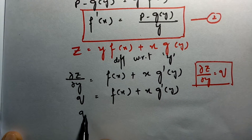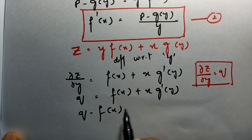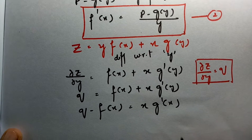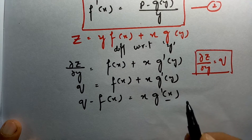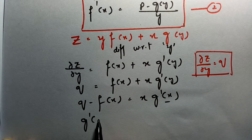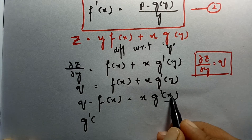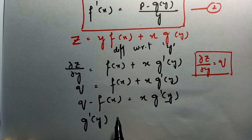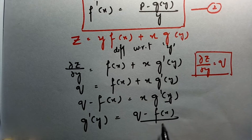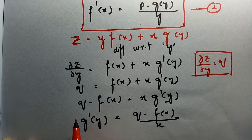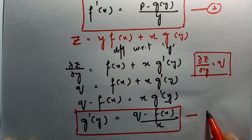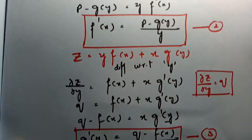Then q − f(x) = x·g'(y). If I want the g'(y) value, then g'(y) is equal to (q − f(x))/x. So this is the value of g'(y) after differentiating with respect to y.